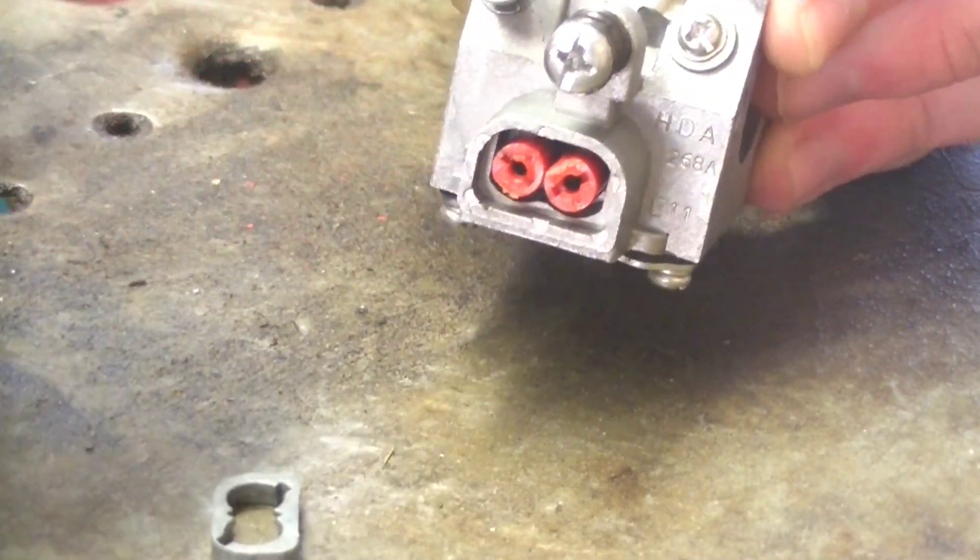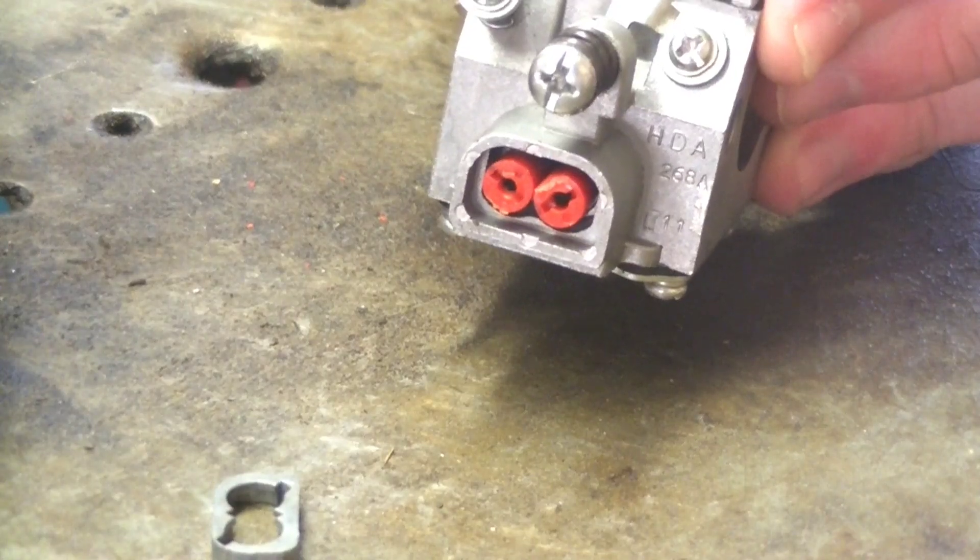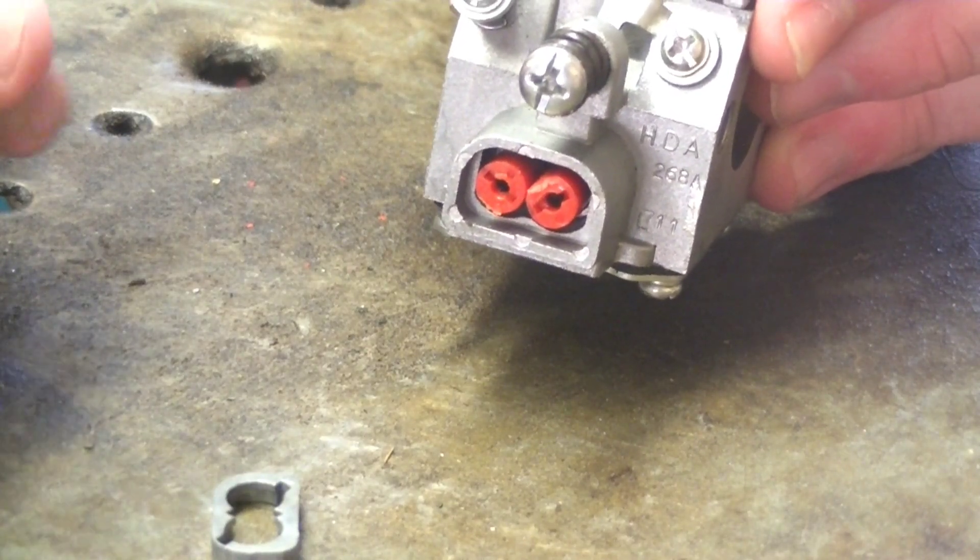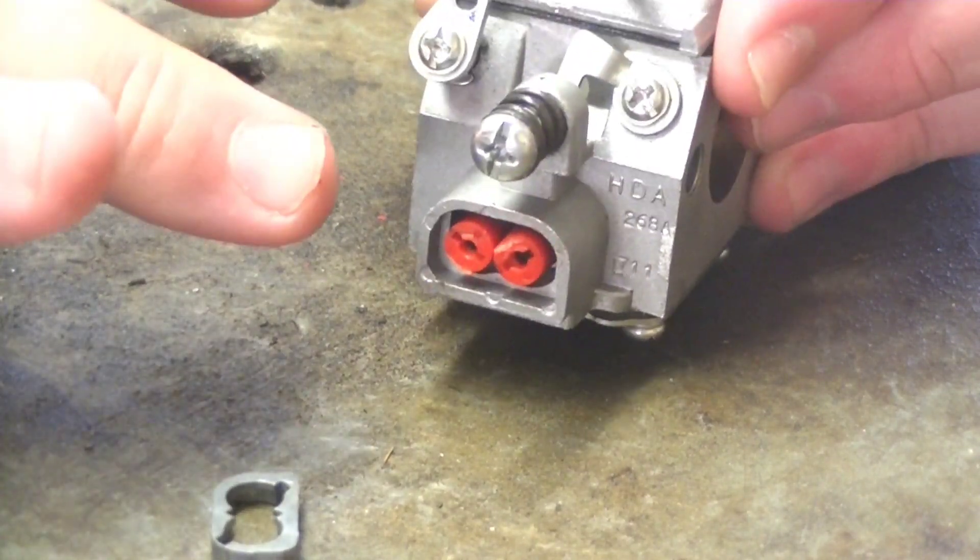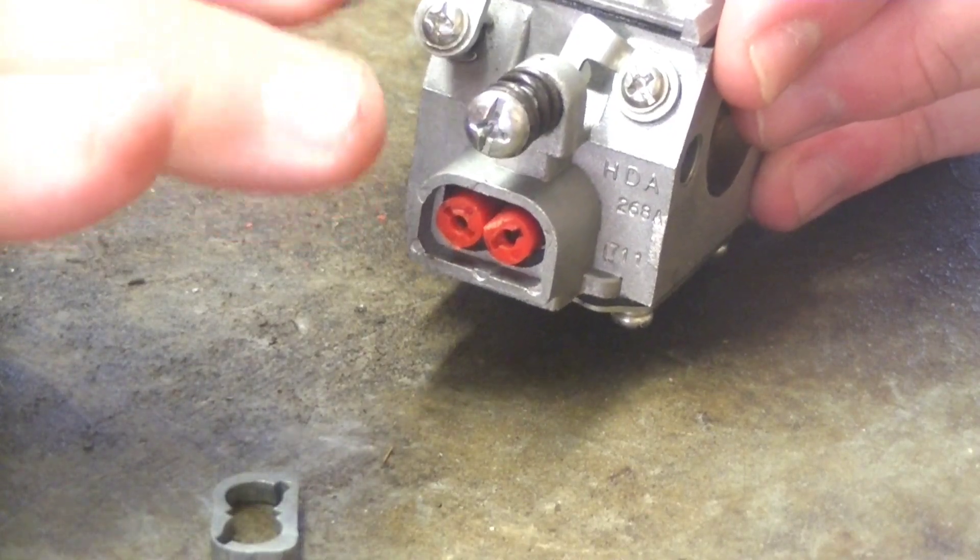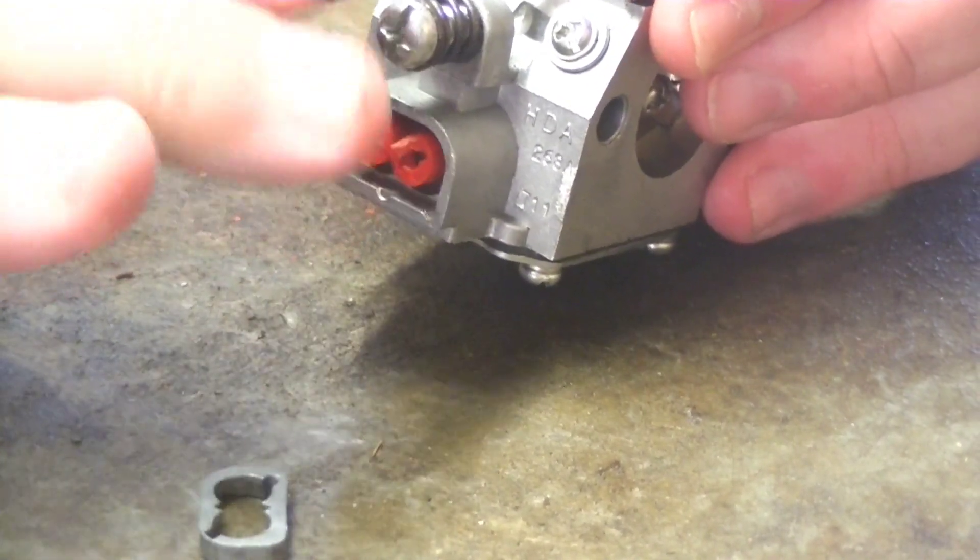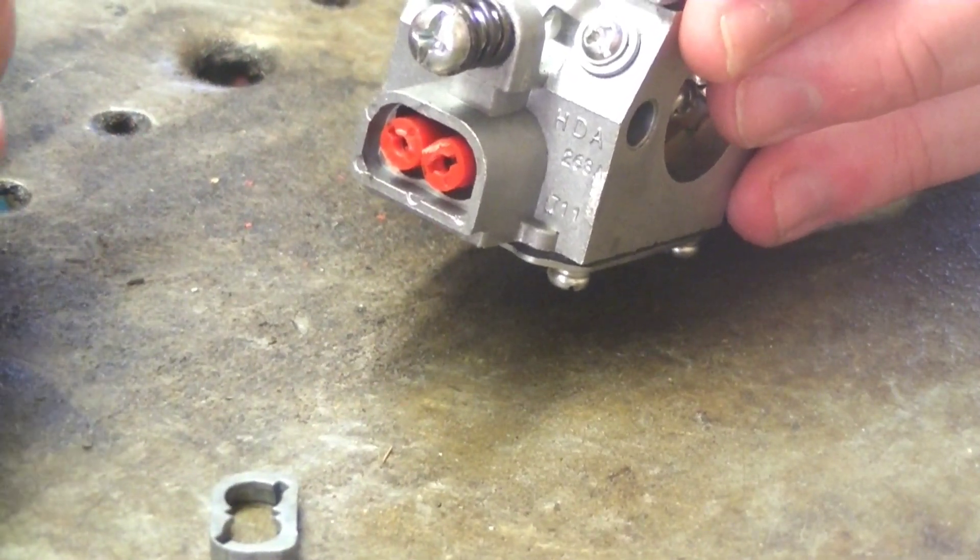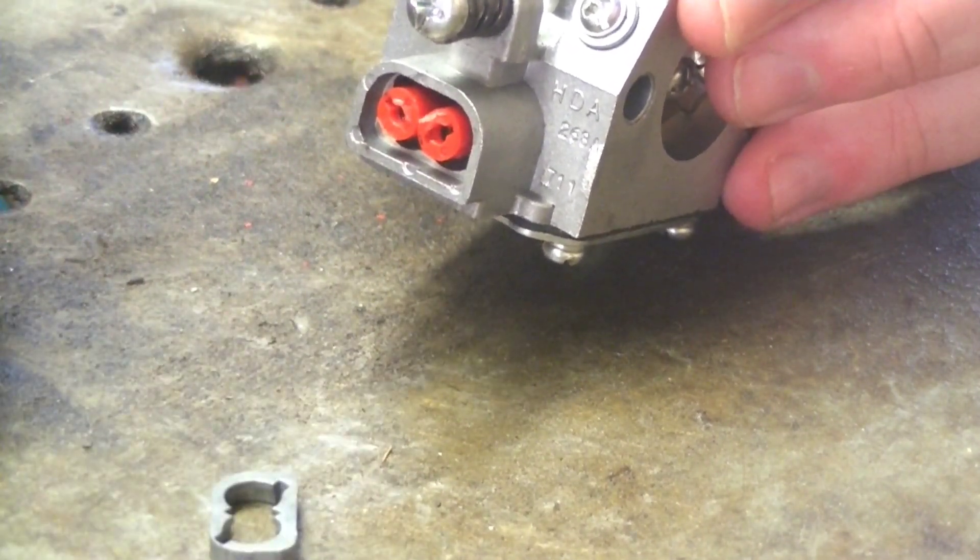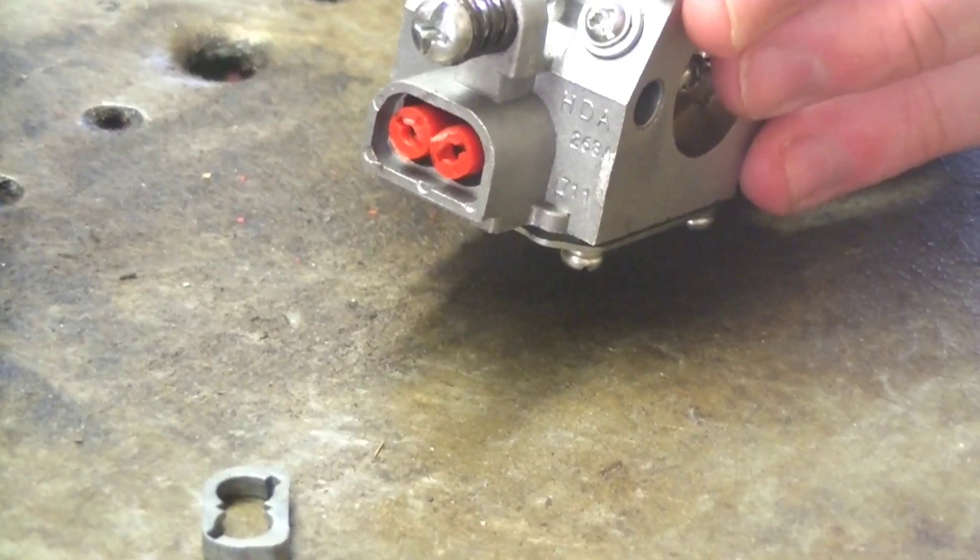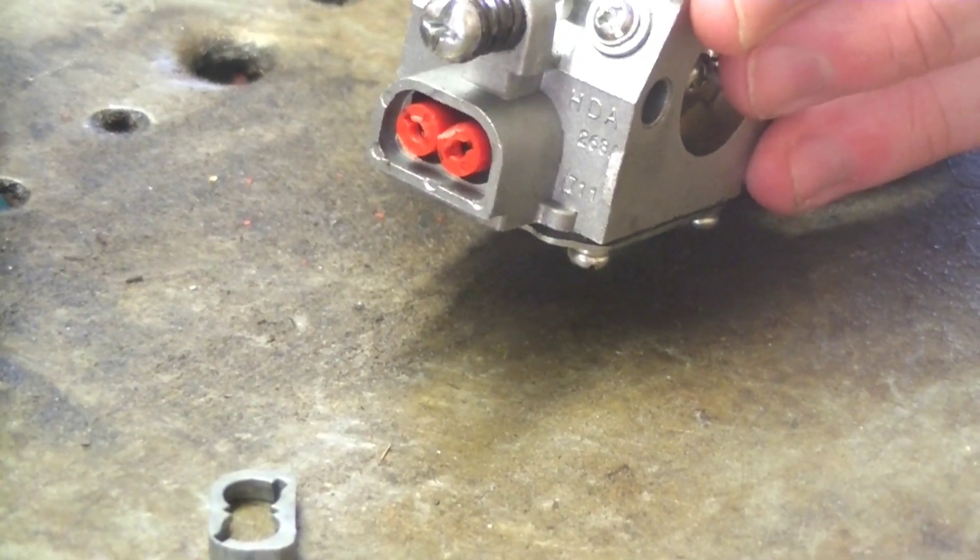You have successfully corrected the limiters on your Echo Chainsaw carburetor. This will apply to every Echo Chainsaw nowadays, especially since just about all of them have these limiters on them. And I don't know about Echo's other equipment, but this is primarily for the chainsaws that they are making nowadays.